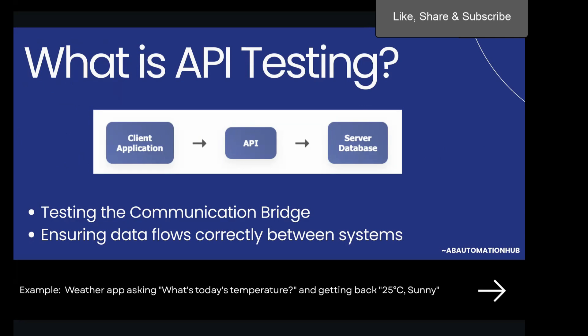First question is: what is API testing? API testing is just like checking if two applications can talk to each other properly. Think of it like testing a telephone conversation — you want to make sure when one person speaks, the other person hears the right message clearly. In technical terms, we are testing the Application Programming Interface, the bridge that allows different software systems to communicate with each other. We send a request and then check the expected response back. In short, it is testing the communication bridge and ensuring that the data flows correctly between the systems.